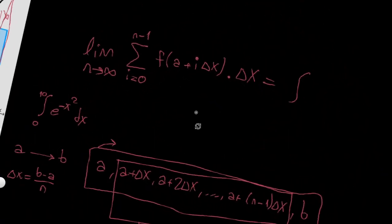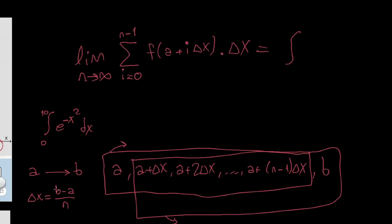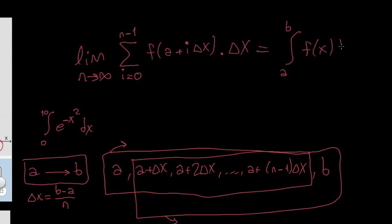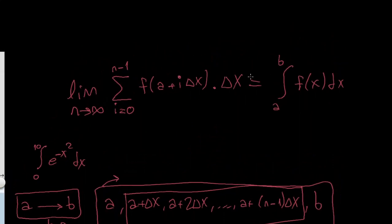What are the bounds? I went from A to B, so my integral is going to go from A to B, and my function was F, so F(x) dx. This is literally equal — it's not even an approximation — because we took the limit as n goes to infinity. So this is our formula.